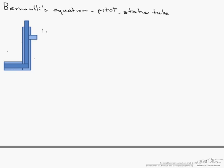Bernoulli's equation can be used for a number of different situations. In this particular video we are going to apply it to what is known as a pitot-static tube. This is an example of a pitot-static tube.